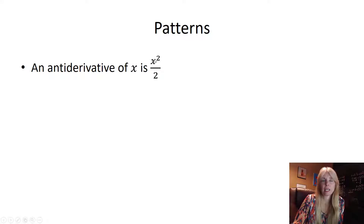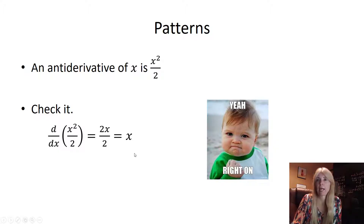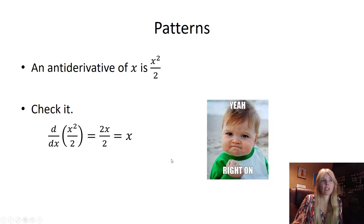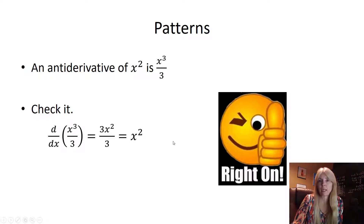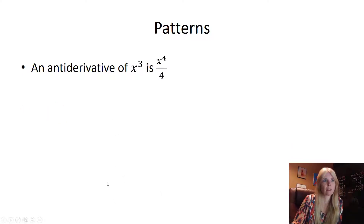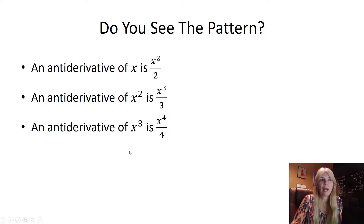Let's see if we can find a pattern. An antiderivative of x is x²/2. I can verify this by taking the derivative: bring the 2 down, subtract 1, the 2's cancel, and I get x back. An antiderivative of x² is x³/3, because if I take the derivative of x³/3 I get x² back. An antiderivative of x³ is x⁴/4, because taking the derivative gives x³.